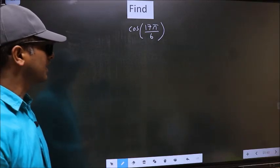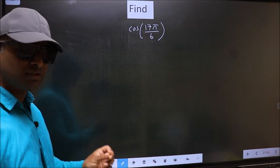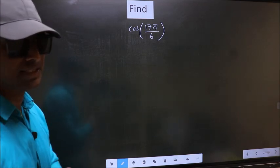Find cos(17π/6). To find this, we should follow this method.